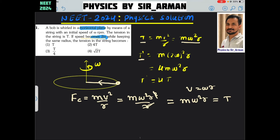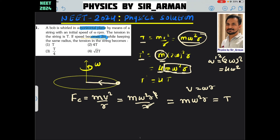T' will be calculated using the same equation: m times the new omega, which is 2ω. Squaring 2ω gives 4ω², so T' equals 4mω²r. Comparing with the first equation, the new tension is 4 times the original tension.